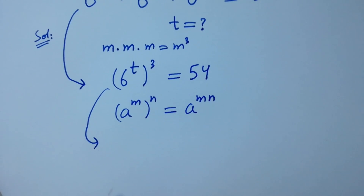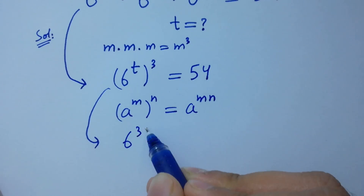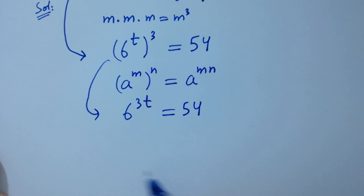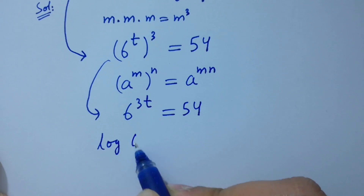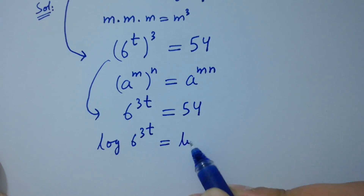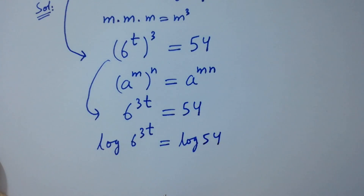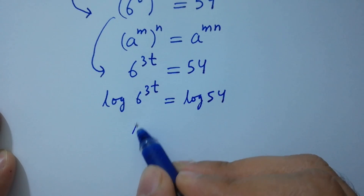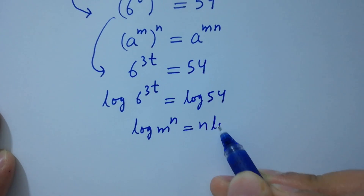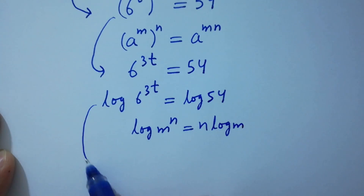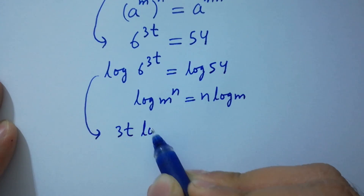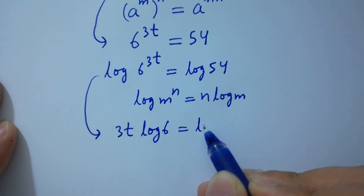We have 6 to the power 3t equal to 54. Taking log on both sides: log of 6 to the power 3t equals log 54. As log m to the power n equals n log m, we get 3t log 6 equals log 54.